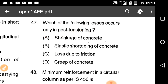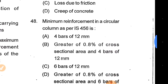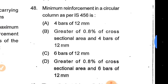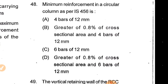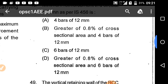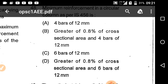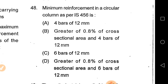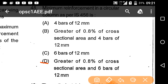Minimum reinforcement in a circular column as per IS 456 is the greater of 0.8% of the gross cross-sectional area or based on the support formula. Option D is the correct answer.